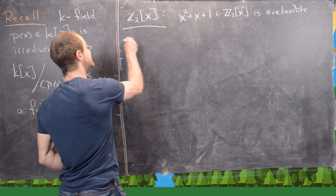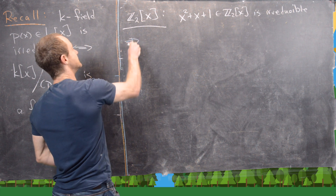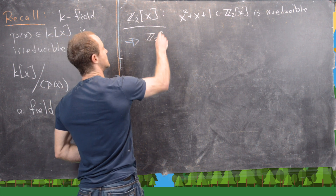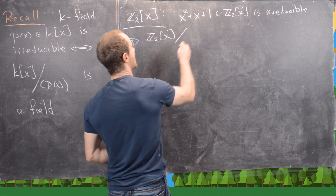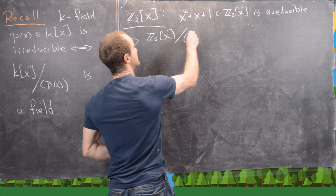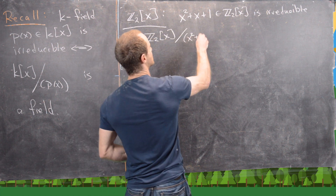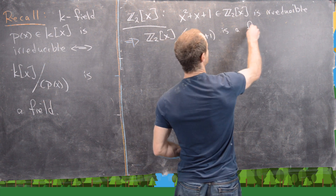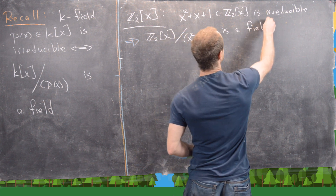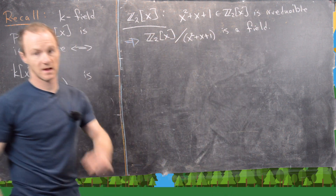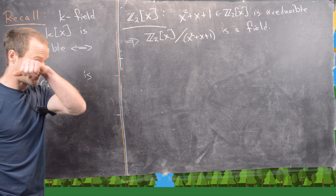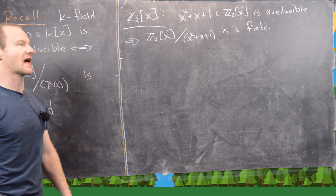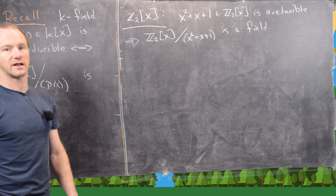This tells us that Z₂[x] mod the ideal generated by x²+x+1 is a field. And this field will have four elements.